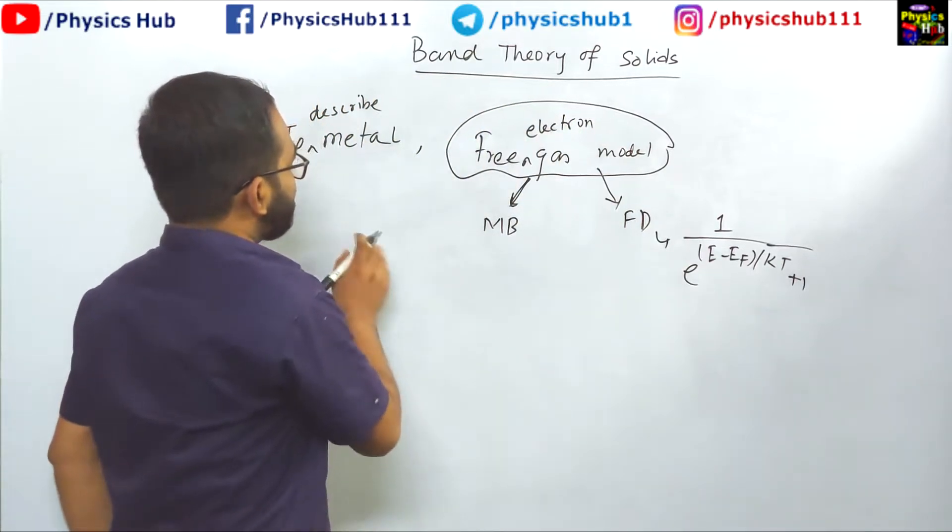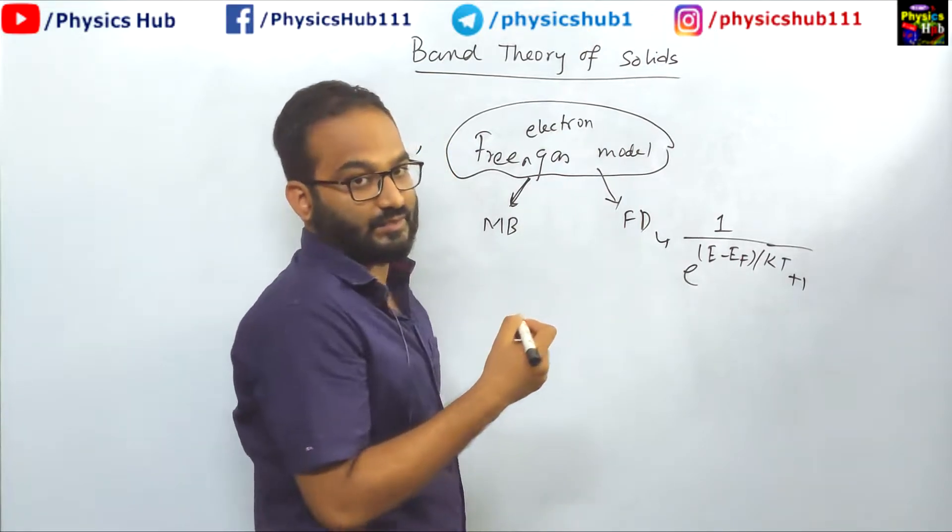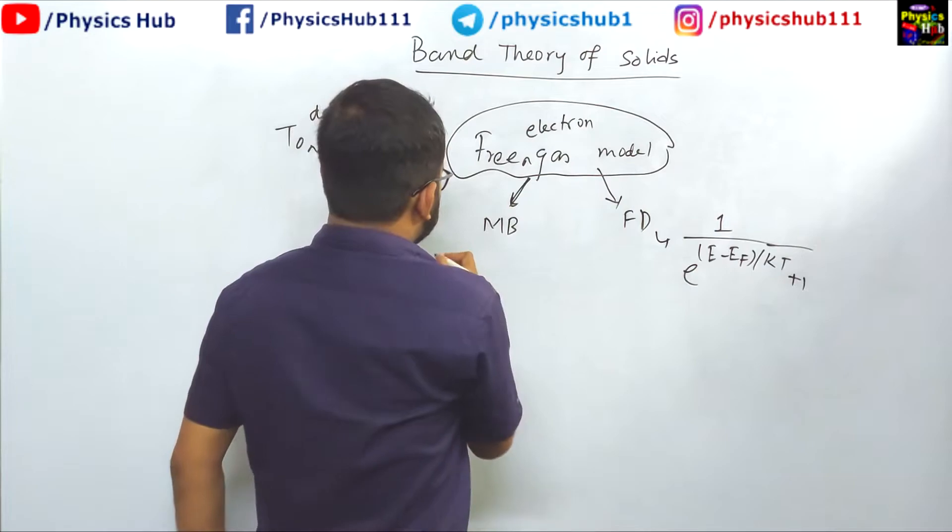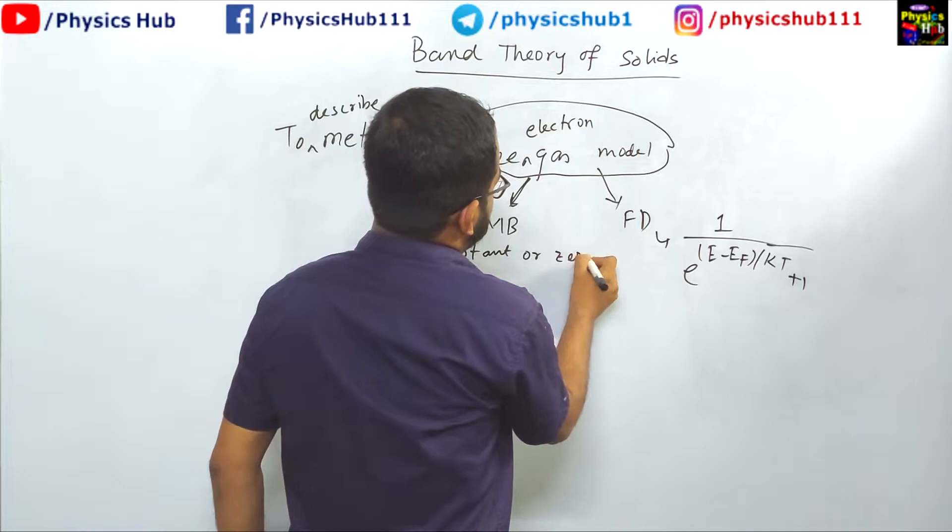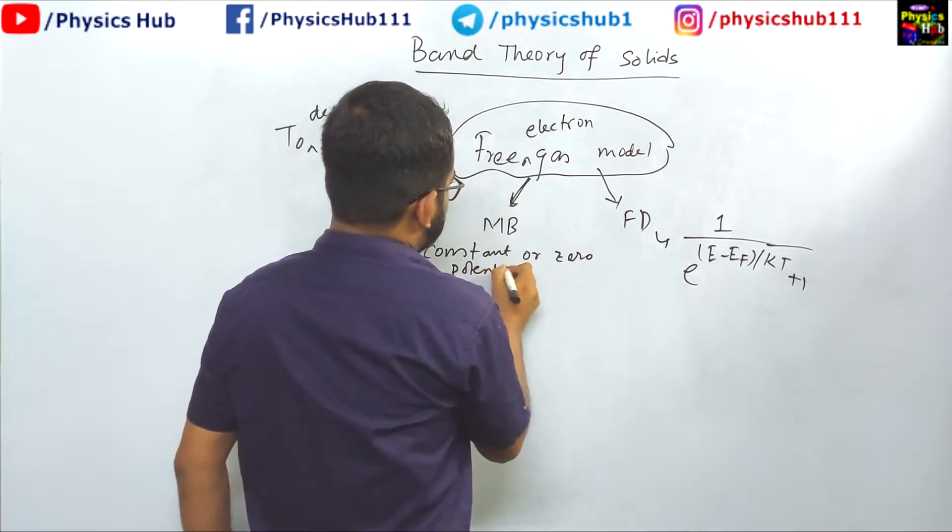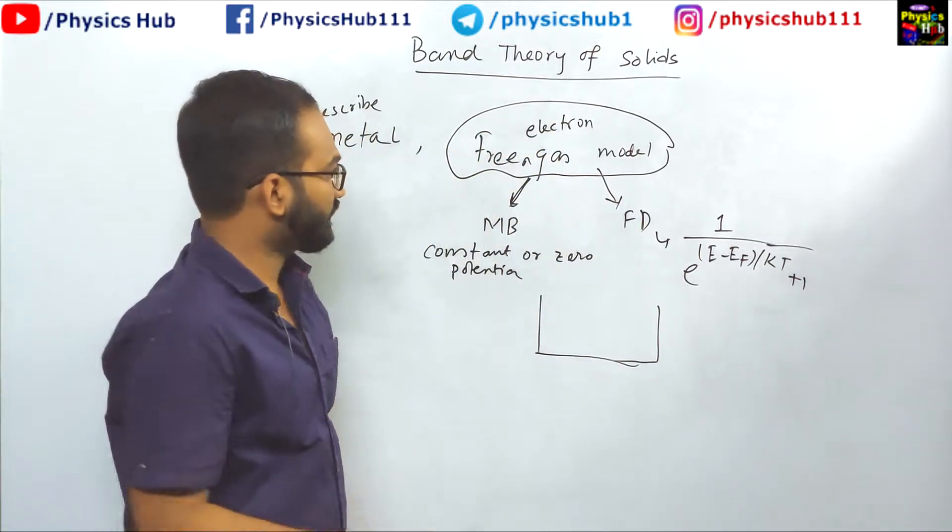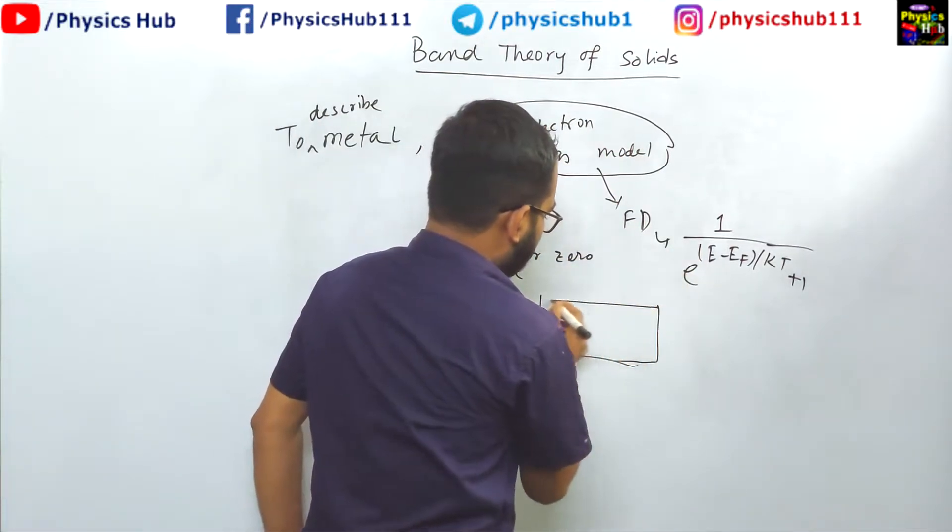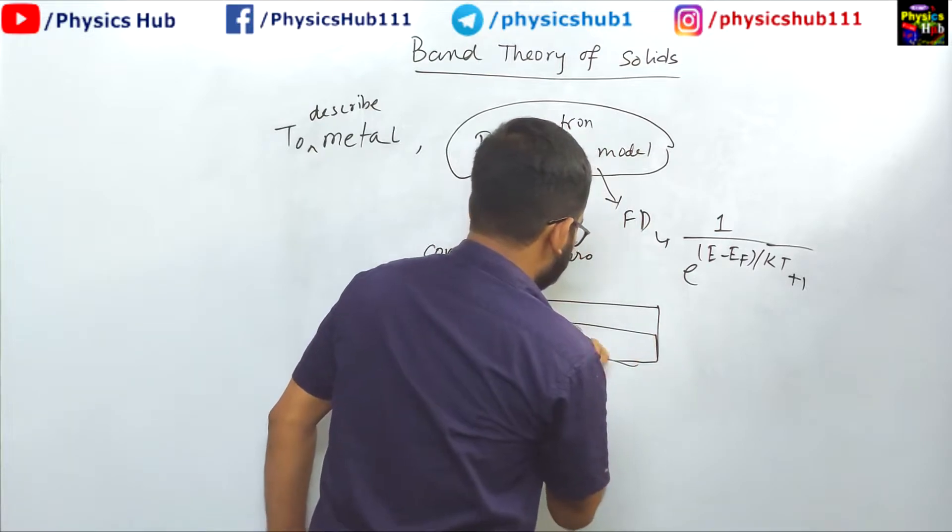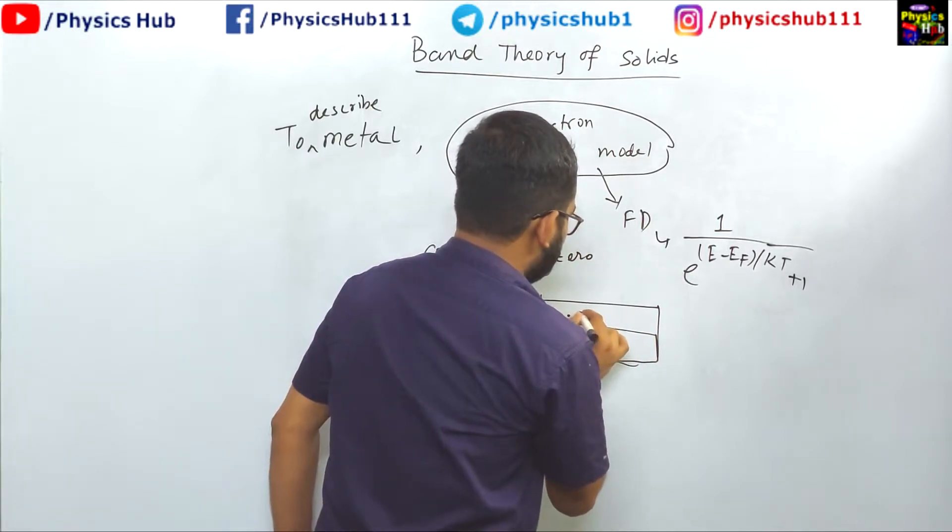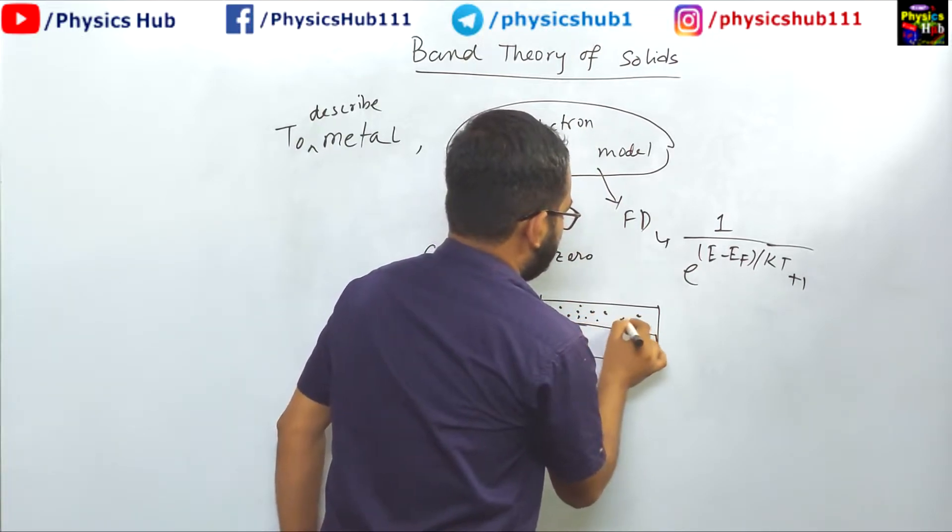The free electron gas model was based on the potential inside the crystal, which was taken to be constant or zero. If we consider the inside of a material as per this model, it had constant or zero potential, and the electrons could freely move in this space inside the crystal.